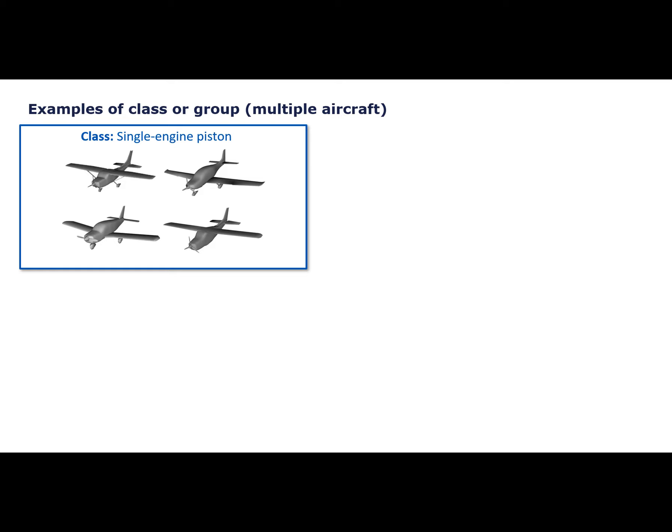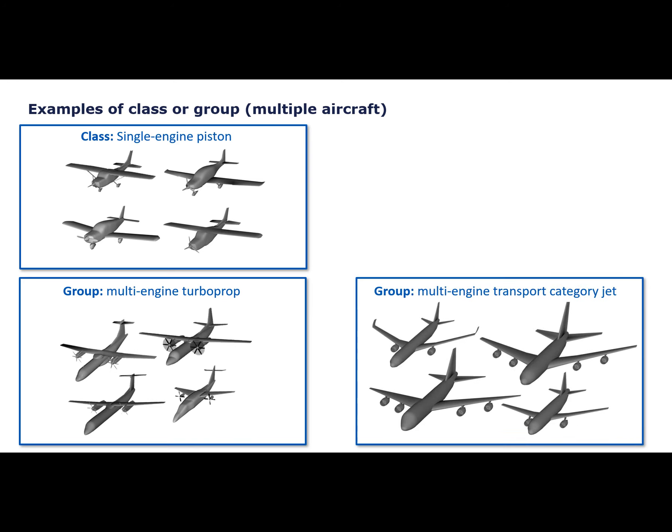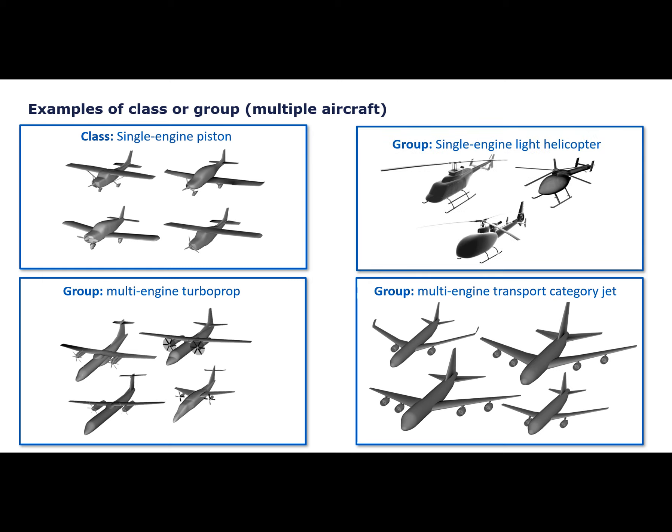A generic feature may also simulate something not defined as a class, such as a multi-engine turbine airplane — such airplanes require a pilot type rating, so we talk about a group of aircraft rather than a class. The same applies to multi-engine jets, and under EASA regulations there are no helicopter class ratings, so every helicopter requires a type rating — we talk about a group of helicopters, for example a light single-engine helicopter. A generic feature may use data from multiple aircraft within the class or group, and the flight performance does not have to match a certain aircraft but should be characteristic to the aircraft within the simulated class or group.